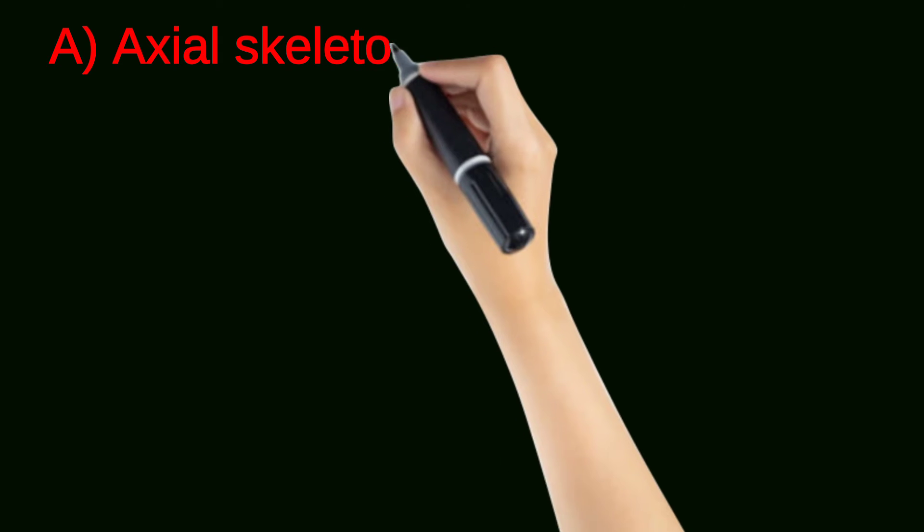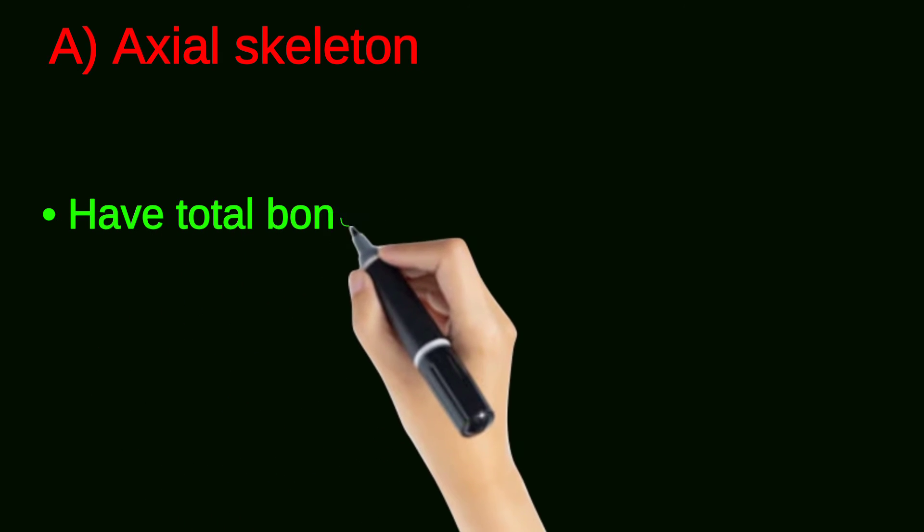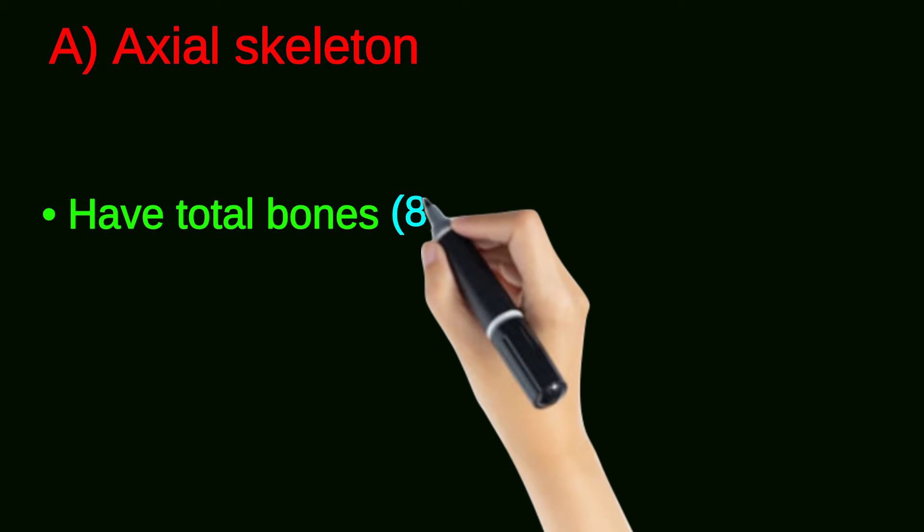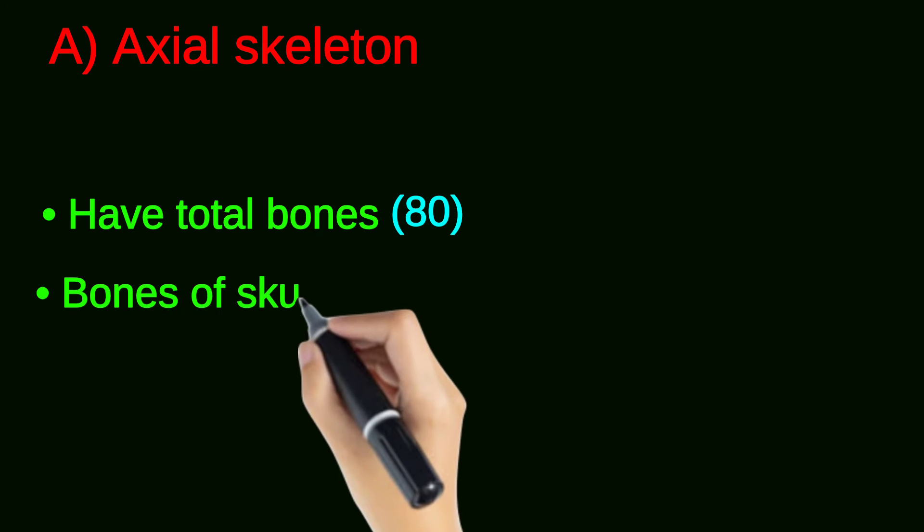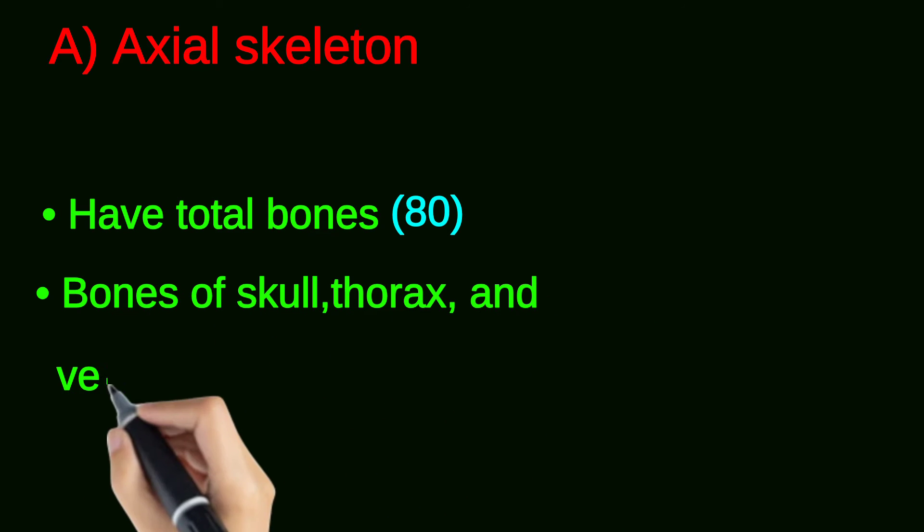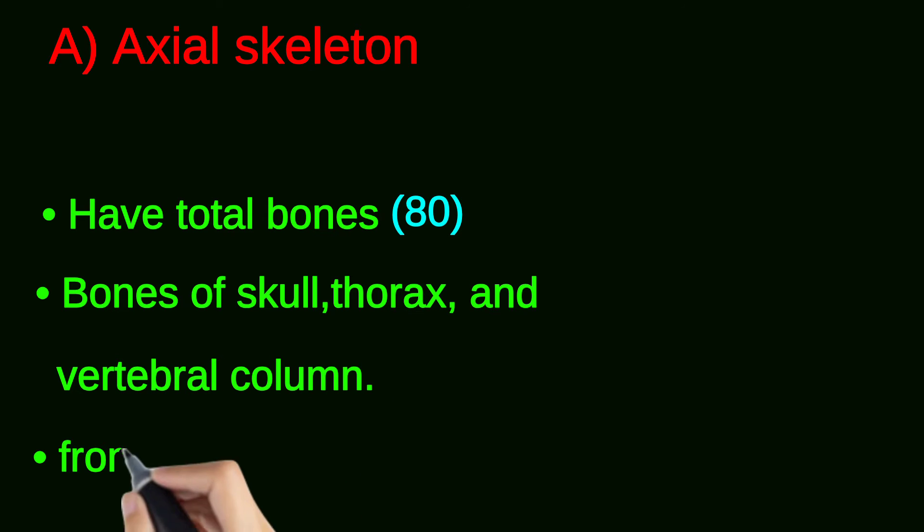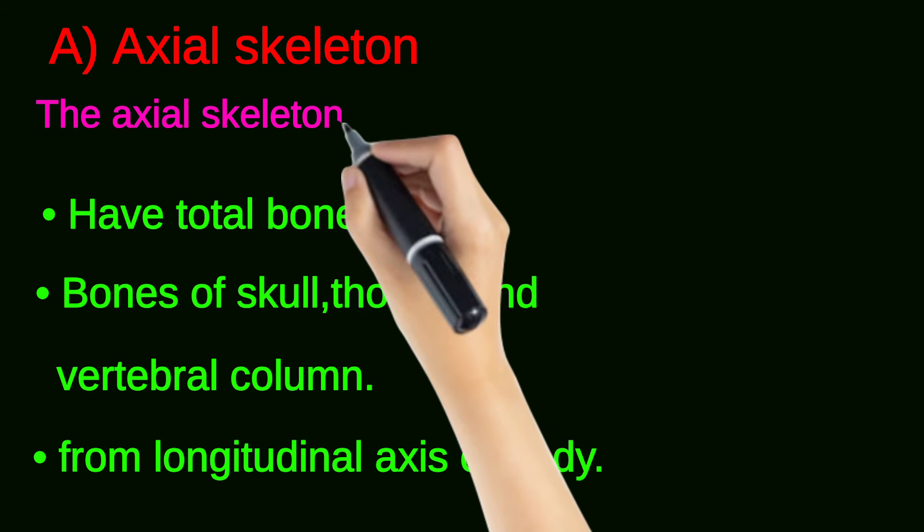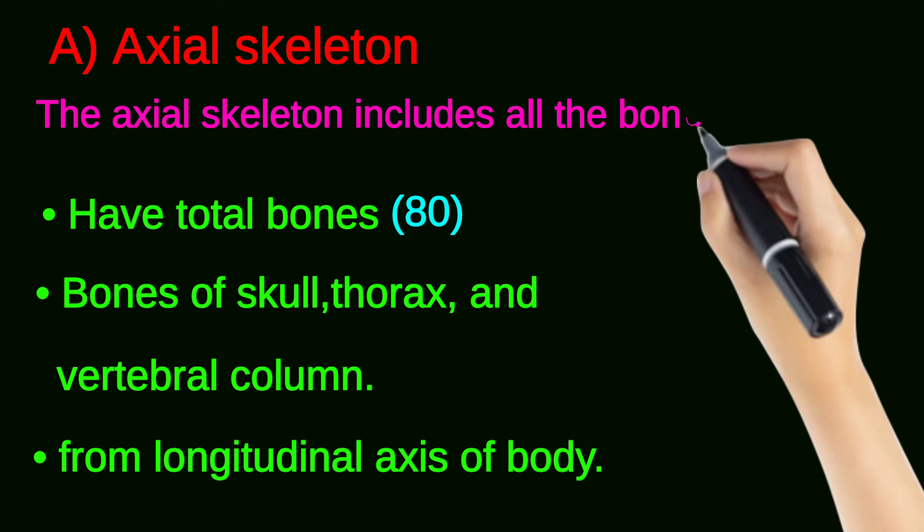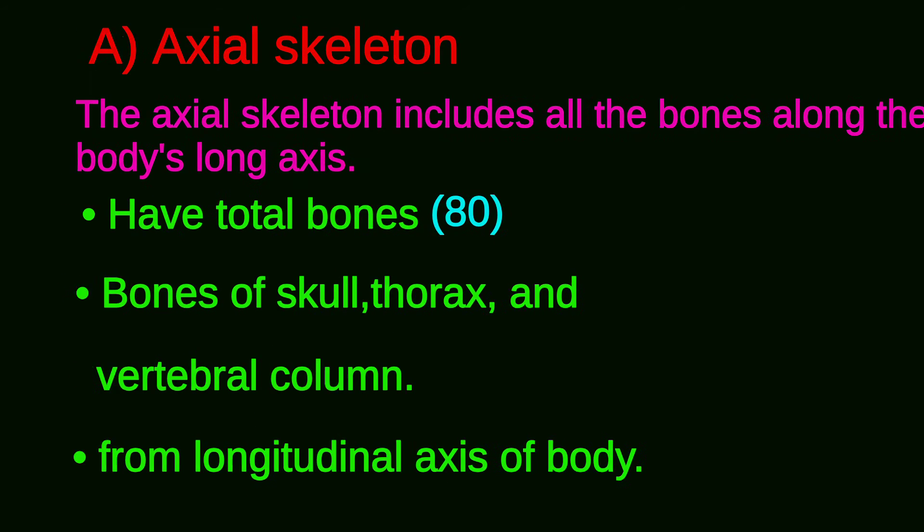The first division is axial skeleton, which have total bones 80, which includes bones of skull, thorax, and vertebral columns. The axial skeleton involves all the bones along the body's long axis.